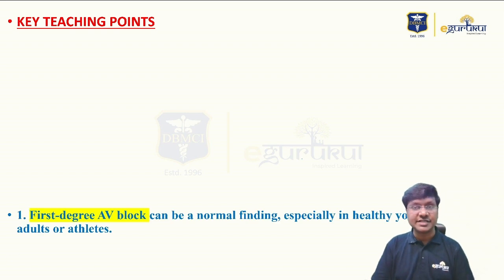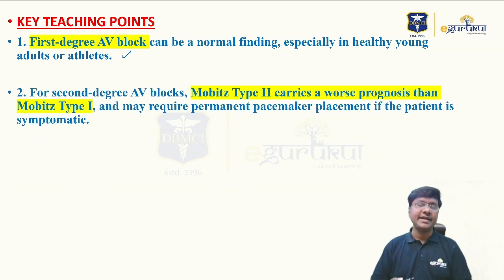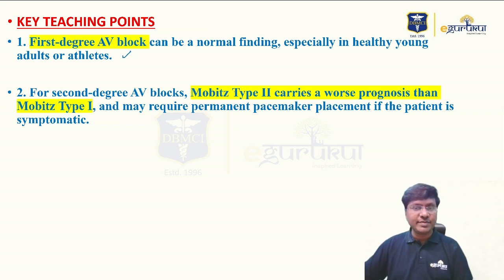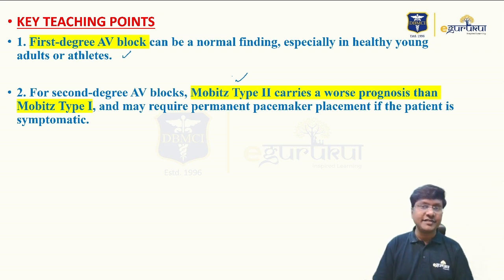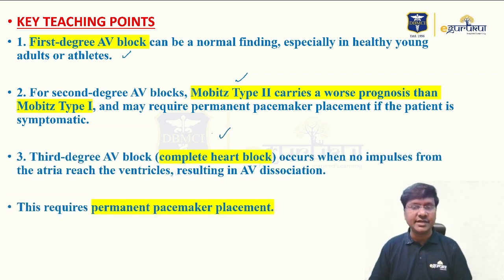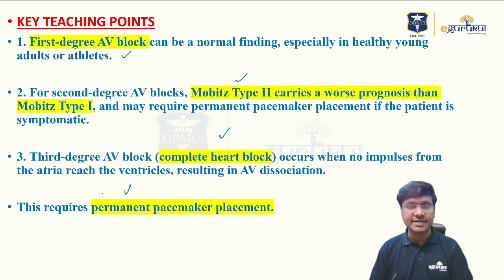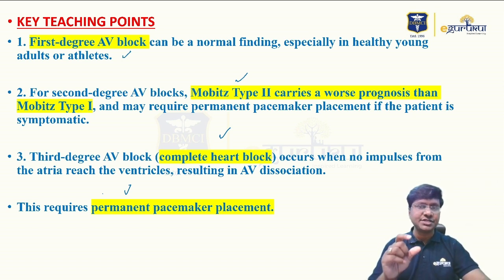Let me summarize the key teaching points. First degree AV block can be a normal finding, even in healthy young adults or athletes. In second degree AV block, Mobitz Type 1 does not require a pacemaker, but Mobitz Type 2 carries the worst prognosis and requires a permanent pacemaker when symptomatic — as our patient had fatigue, weakness, and lightheadedness. Finally, complete heart block or third degree AV block also requires a permanent pacemaker.